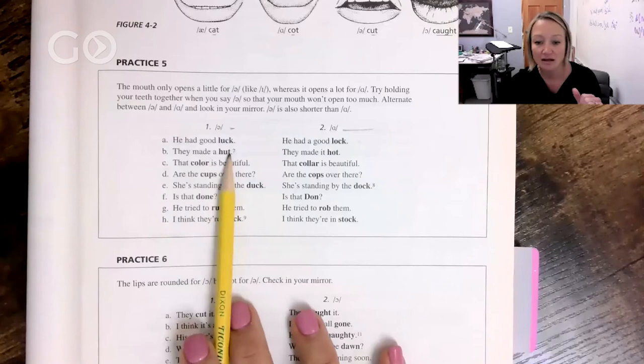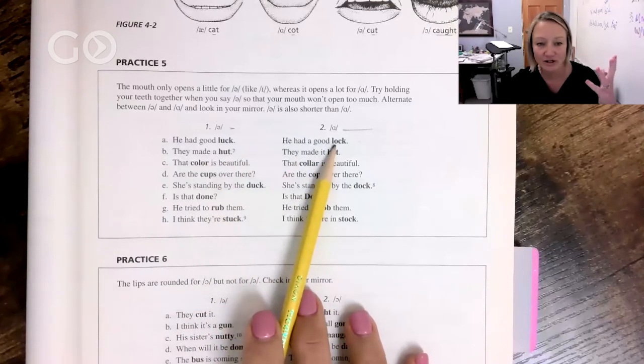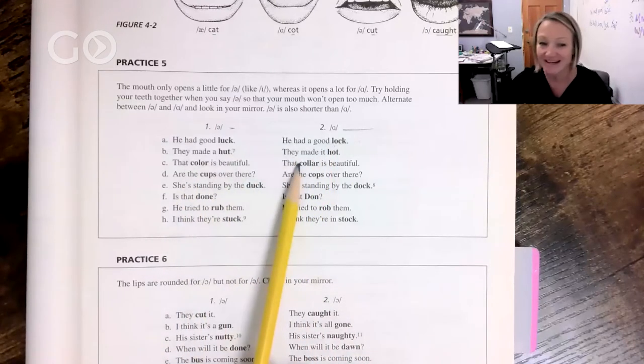It's not—this one isn't super long, it's more like medium, but this one is definitely short. He had a good luck, he had a good lock. But because your mouth goes open so far here, you actually have to make it a little bit longer. They made a hut, they made it hot.